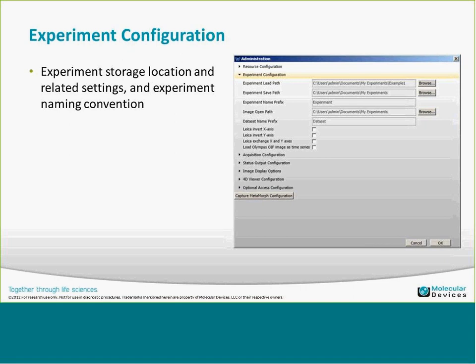There's an option specific for Olympus OAAP images — whether you want to load them as a time series, check that box and they'll come in as a time series in the multidimensional configuration. The acquisition configuration settings show the paths for the master hardware profile file, user hardware profile files, and a scratch folder used by the custom analysis tools for temporary image storage.